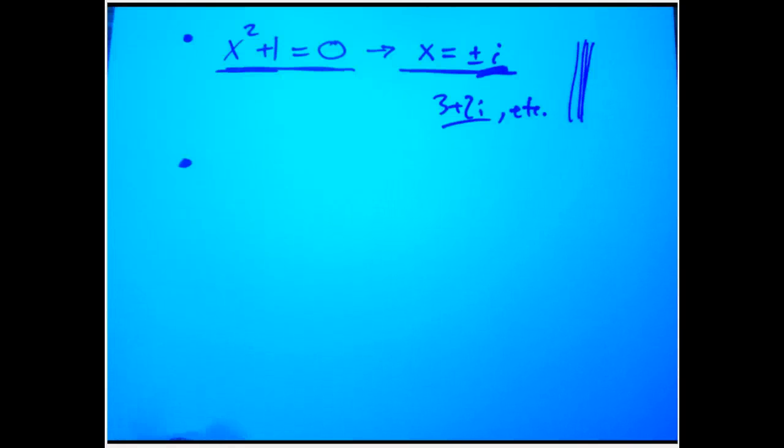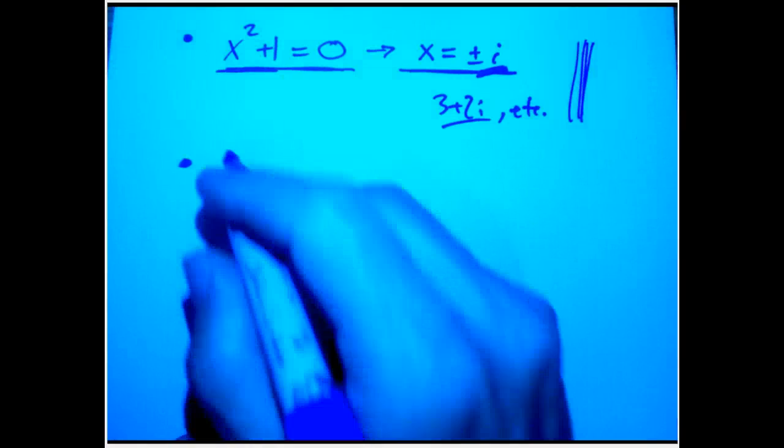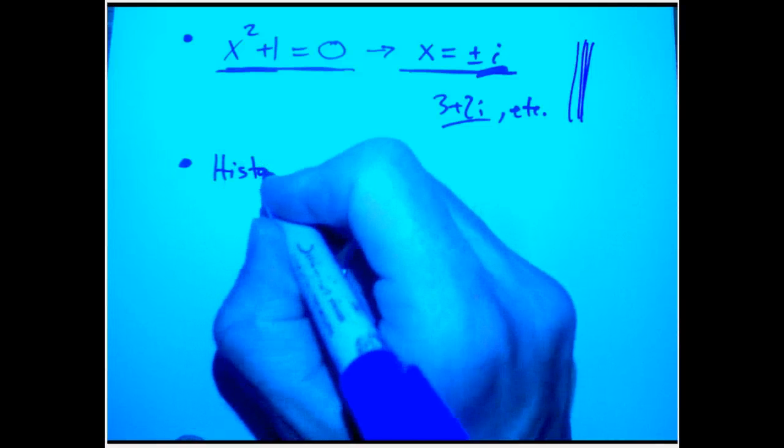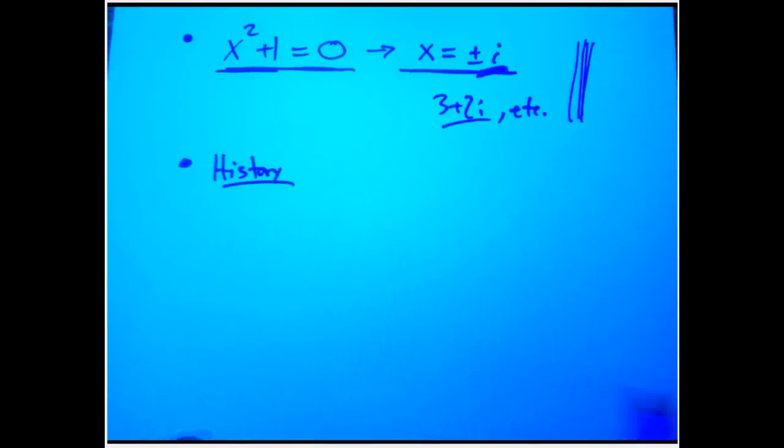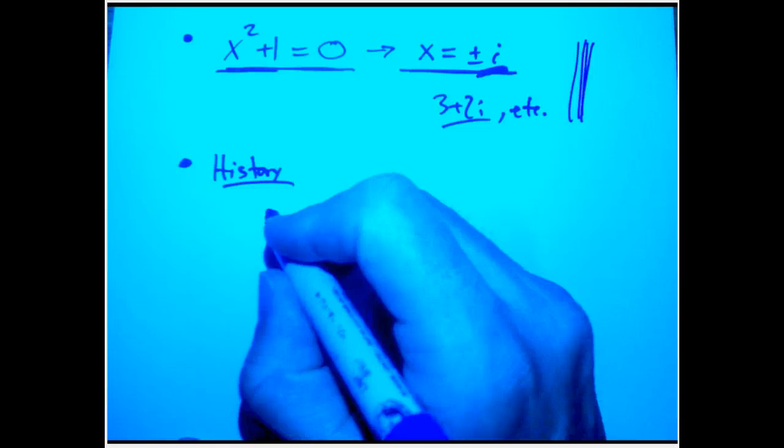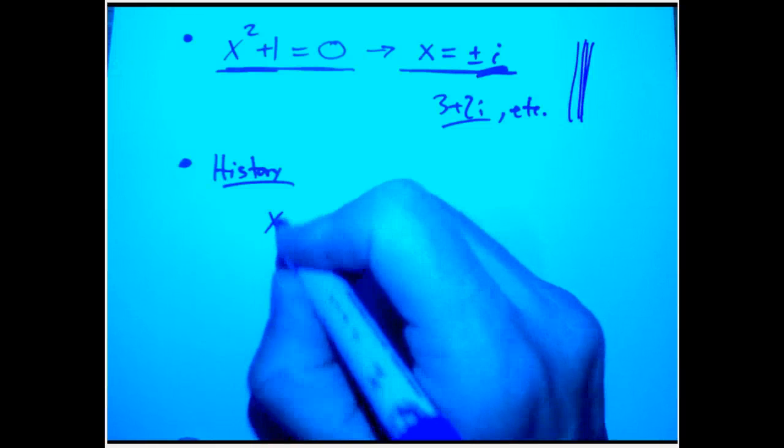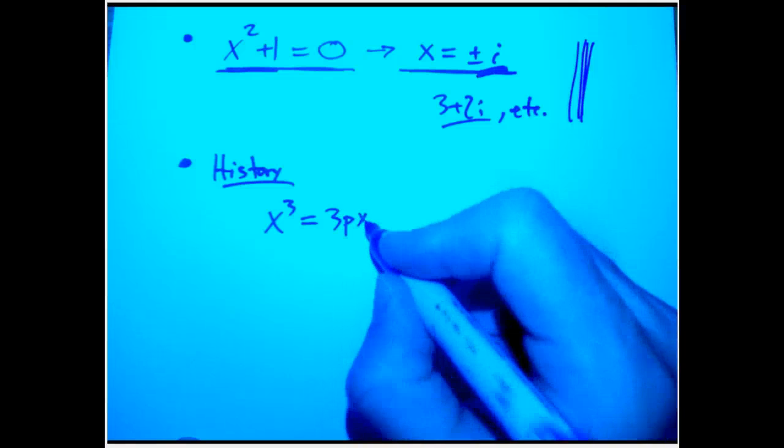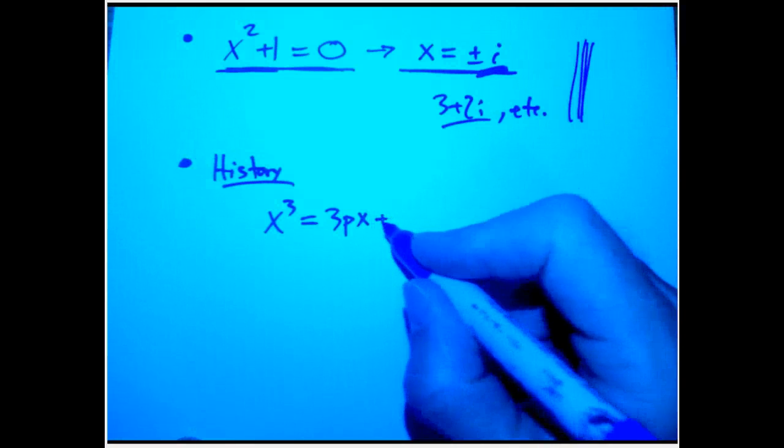So the actual historical root, the first place it shows up, interestingly enough, is in solving cubic equations. For example, x³ = 3px + 2q.